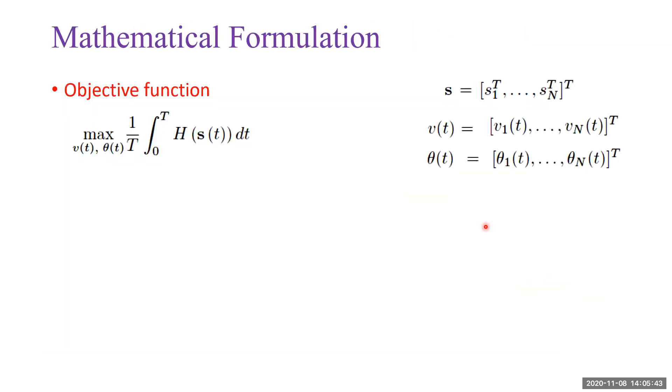To answer these questions, we mathematically formulate the following problem. We have the objective function. The H is the coverage performance. S is the location of all agents in the mission space. We consider a time horizon from 0 to T. And v and u are the control variables.